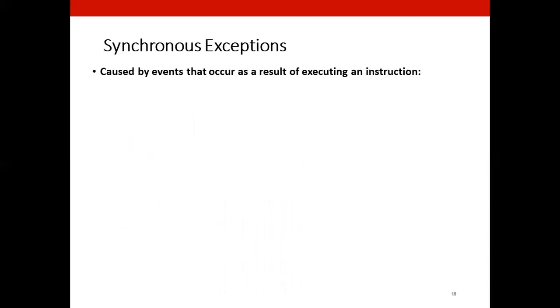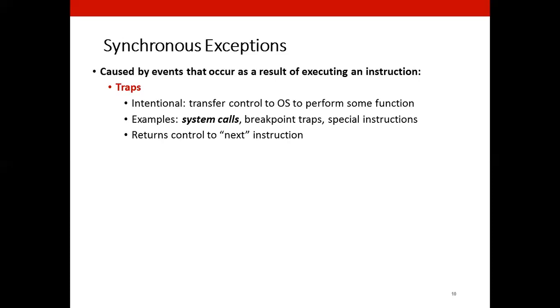Now the other type of exceptions are called synchronous exceptions caused by events that are triggered by executing an instruction or there is something that is undefined. There are three main types of synchronous exceptions. We have the traps, which is a way for an application to internally transfer control to the operating system to perform some function for the applications. That is effectively the operating system APIs.